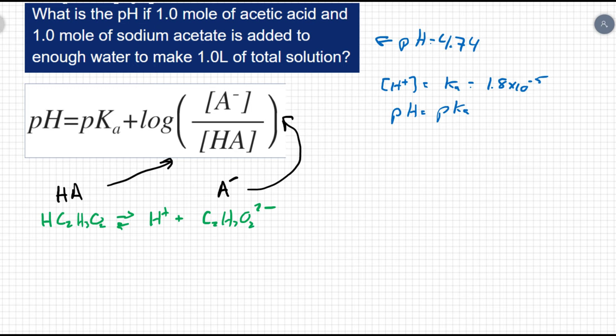which we found already. But now, let's take this and let's add a substance to the buffer. Now, buffers can resist changes in pH, so if we add an acid or a base, it doesn't really matter, we're going to resist a change of pH. So let's add a base this time, let's add 0.05 moles of NaOH. There's a strong base right there.